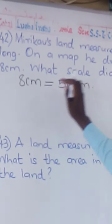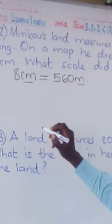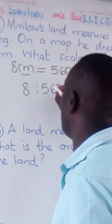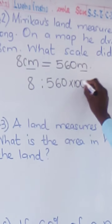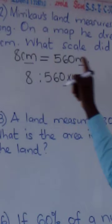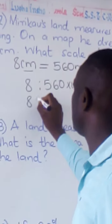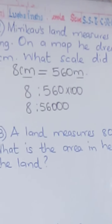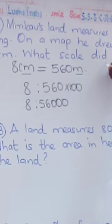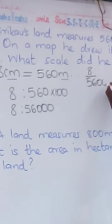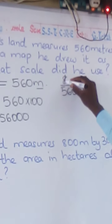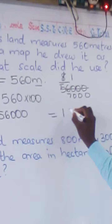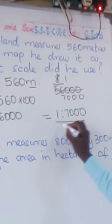So 8 centimeters represents 56,000 centimeters. As a scale, 8 is to 56,000. We simplify by dividing both by 8: 8 ÷ 8 = 1, and 56,000 ÷ 8 = 7,000. So the scale would be 1 : 7,000.